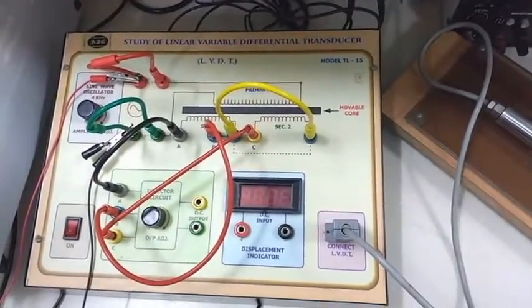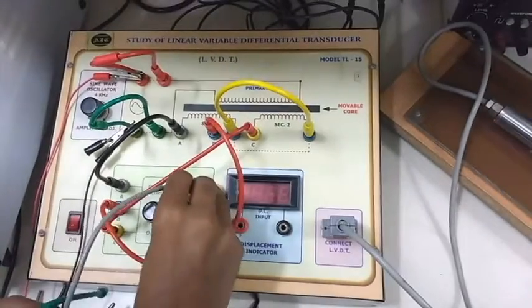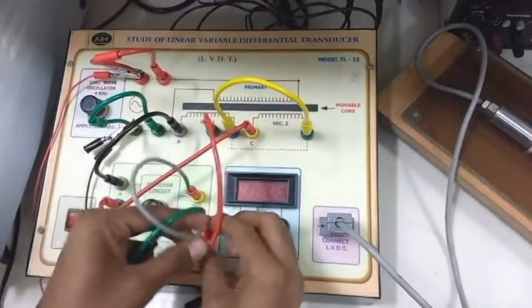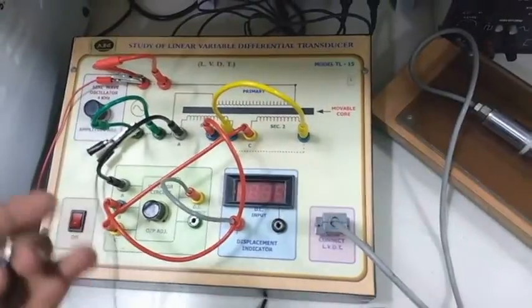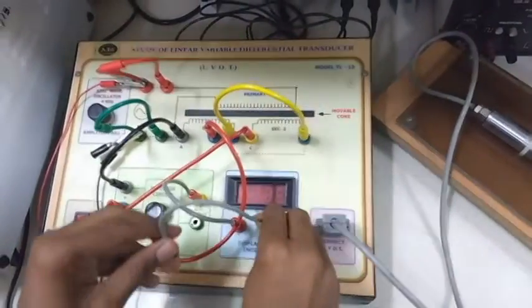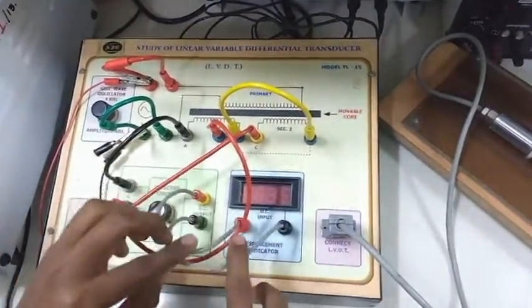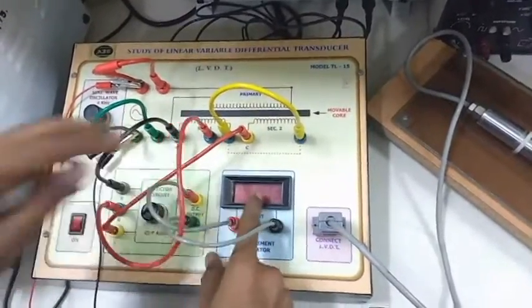With DC input terminal. And this displays you the output for DC input. Now here you can observe your output. By varying this displacement, you can clearly see your output also varies.